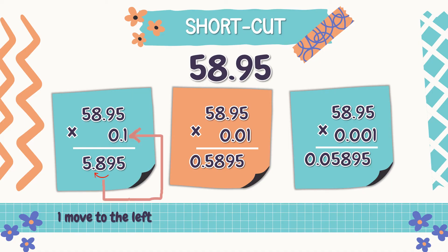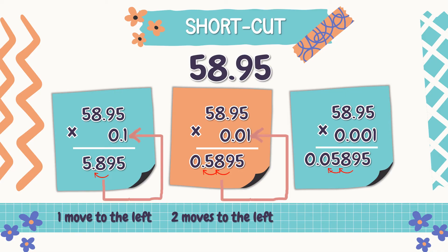In multiplying by one-hundredth, we move the decimal point two places to the left. In multiplying by one-thousandth, we move the decimal point three places to the left. That's quite easy, right?